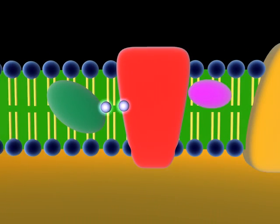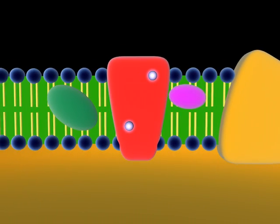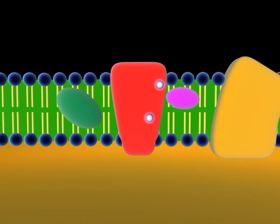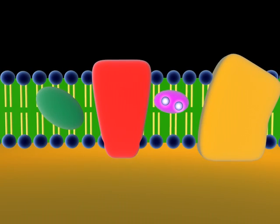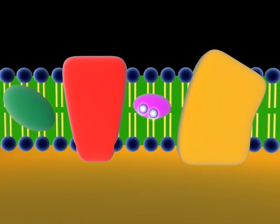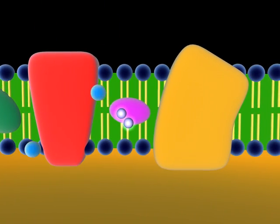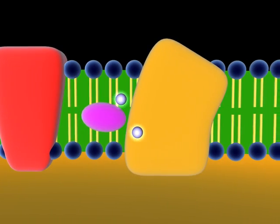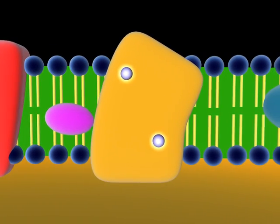As plastoquinone continues, it drops the electrons off at cytochrome B6F. They are then carried away by plastocyanin, another carrier. This movement pulls hydrogen ions surrounding the thylakoid membrane inside. Also, the electrons make a final stop at photosystem I to replace its missing electrons.